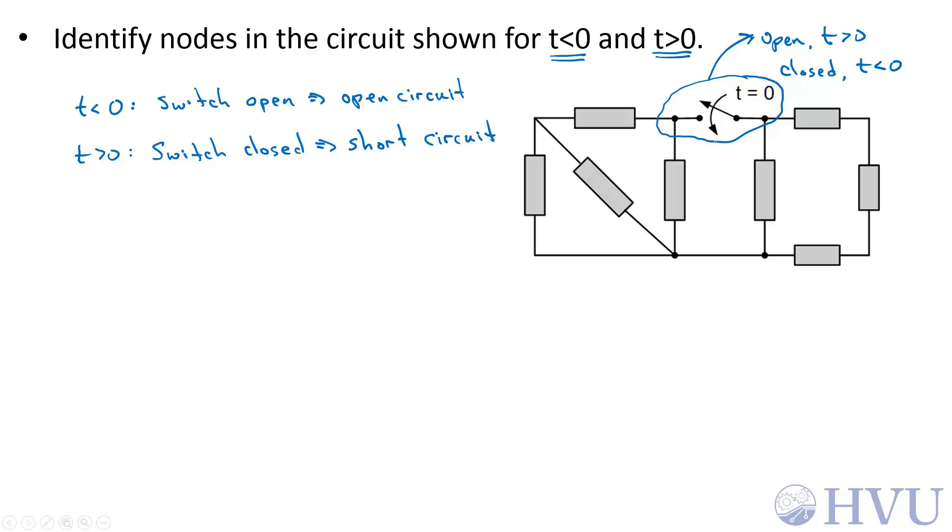For t<0, there's an unknown voltage difference across the switch. For t>0, there's zero voltage difference across the switch. So I'm going to treat this as two completely separate problems.